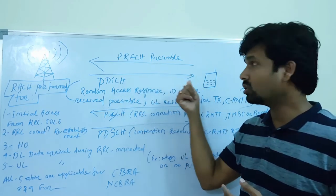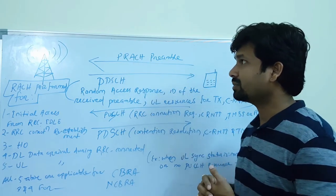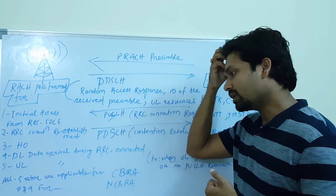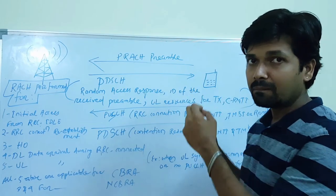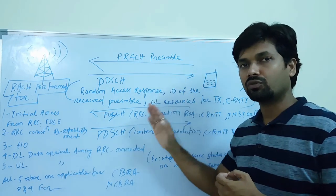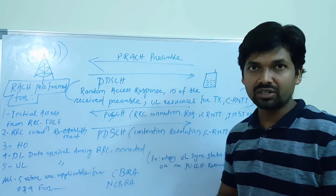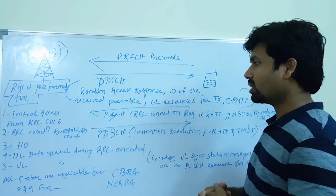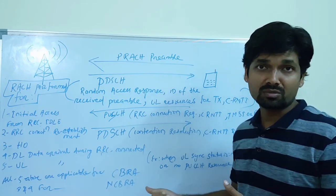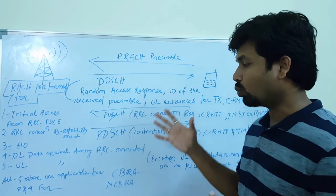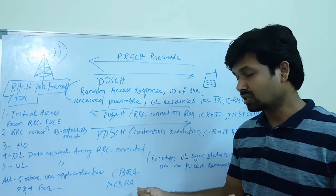In non-contention-based random access, the chance of collision is zero. In contention-based random access, there is still a chance of collision. In contention-based random access, the UE picks a random preamble and sends the PRACH preamble to the E-NodeB. In non-contention-based random access, the E-NodeB sends a specific preamble number to the UE for communication, and this happens only in two cases: handover and downlink data arrival during RRC connected state.